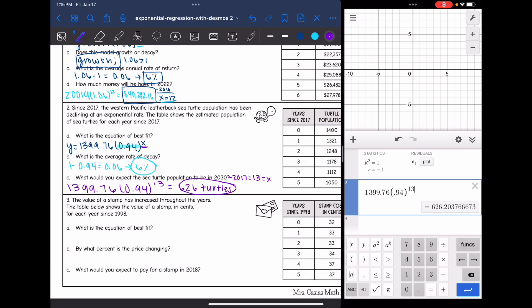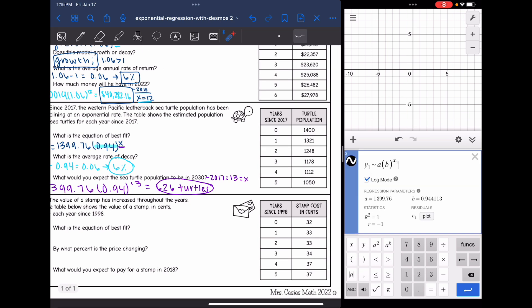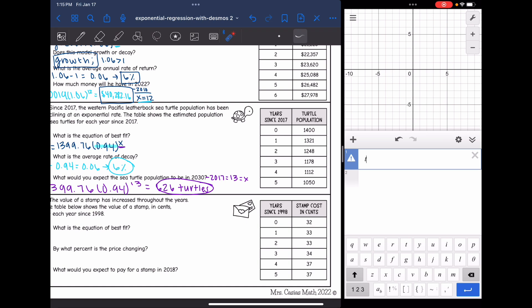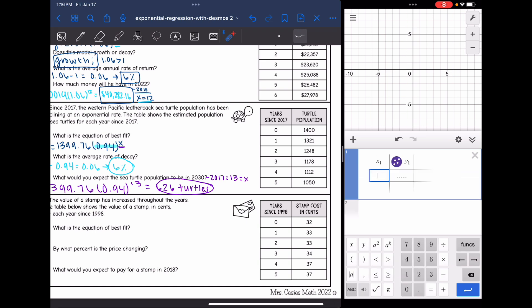Last question says, the value of a stamp has increased throughout the years. The table below shows the value of a stamp in cents for each year since 1998. And it's asking for the equation of best fit. So I need to make a new table in Desmos.